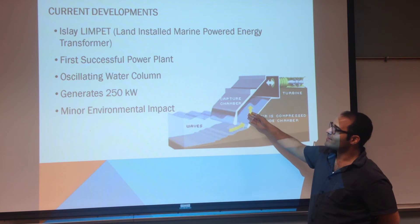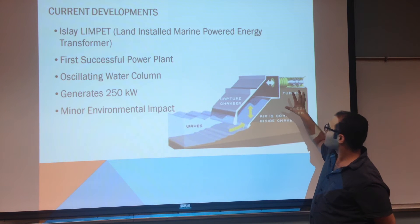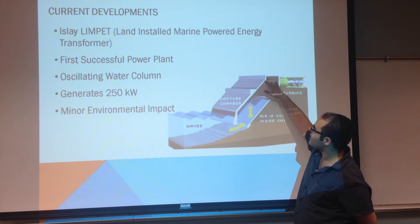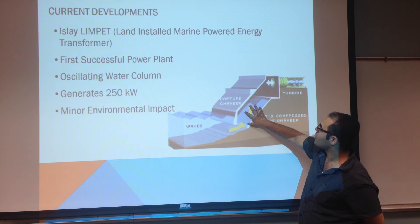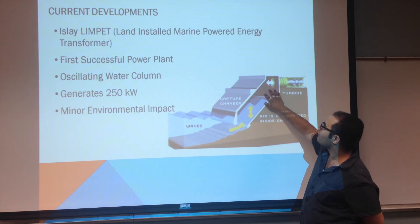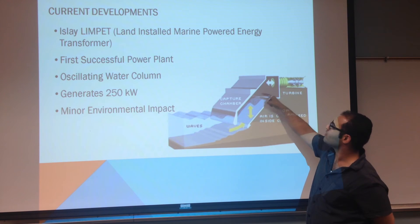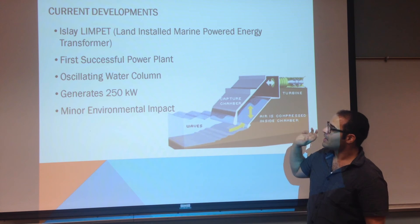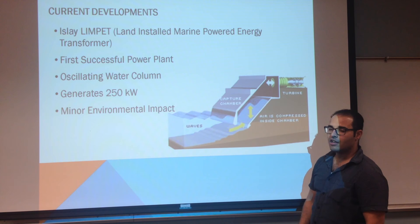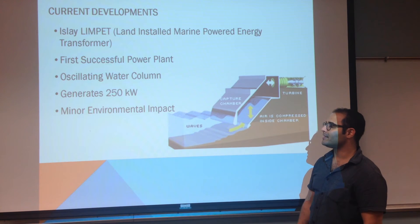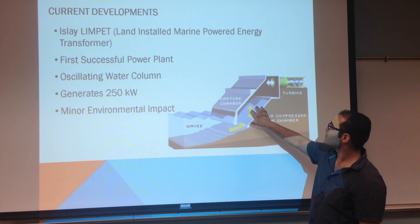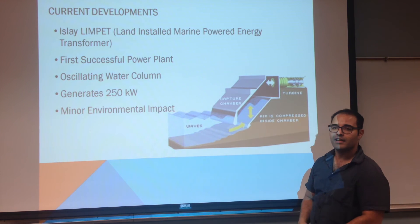It is of the oscillating water column configuration. The power plant is installed on shore, and the structure has an overhanging section — like an awning — which traps water into a chamber. As waves come back and forth, the water swells up and down, increasing and decreasing the air pressure, causing the turbine to move in both directions to obtain electrical power. It was initially rated at 500 kilowatts but recently downgraded to 250 kilowatts. Minor environmental impacts include marine life becoming entrapped in the chamber, and turbine noise affecting marine life communication.